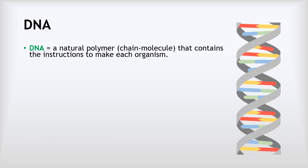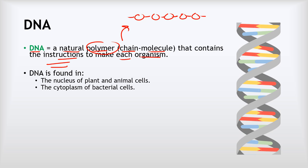DNA is a natural polymer that contains the instructions to make each different living organism. By polymer we mean a chain molecule, so you can imagine it a bit like a string of smaller molecules strung together into one much bigger molecule. No two organisms are identical because we've all got slightly different DNA, except for identical twins of course. For example, you and I look slightly different because we've got slightly different DNA, whereas you and a spider look very different because you've got very different DNA. DNA is found in the nucleus of plant and animal cells and the cytoplasm of bacterial cells.